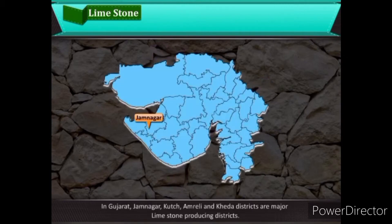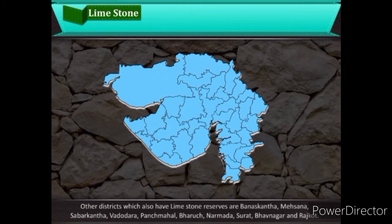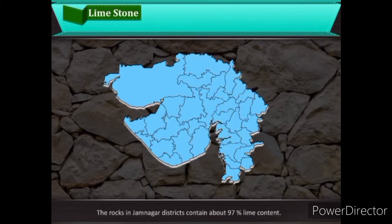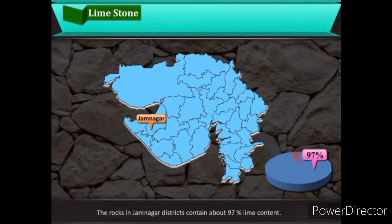In Gujarat, Jamnagar, Kutch, Amreli, and Kheda districts are major limestone-producing areas. Other districts with limestone reserves include Banaskantha, Mehsana, Sabarkantha, Vadodara, Panchmahal, Bharuch, Narmada, Surat, Bhavnagar, and Rajkot. The rocks in Jamnagar district contain about 97% lime content.